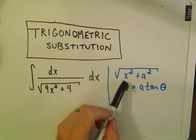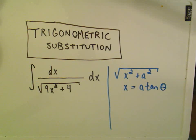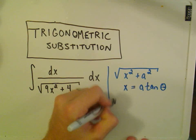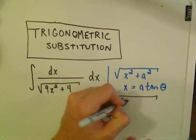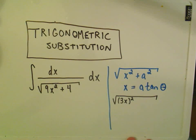It says if you have a variable squared plus a number squared, the substitution you use is x equals the number tangent theta. Well, that's not quite what we have here. But I can rewrite 9x squared as 3x quantity squared. That'll still give me my 9x squared if I square both parts.